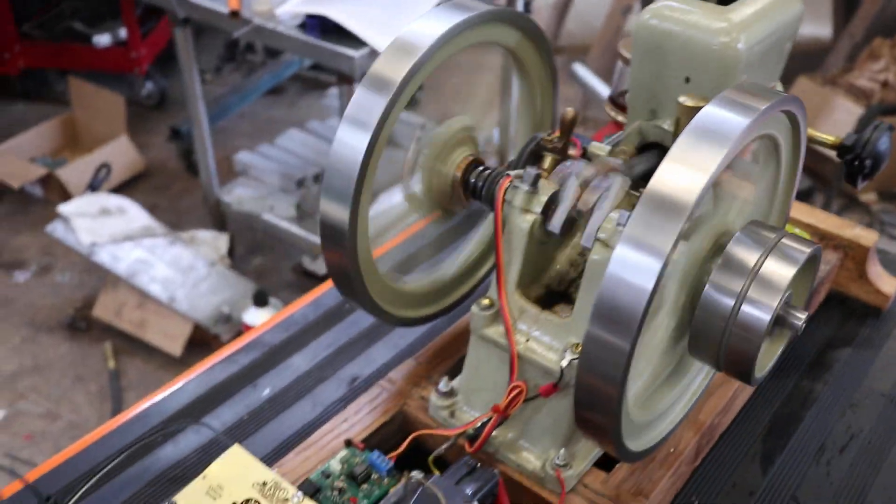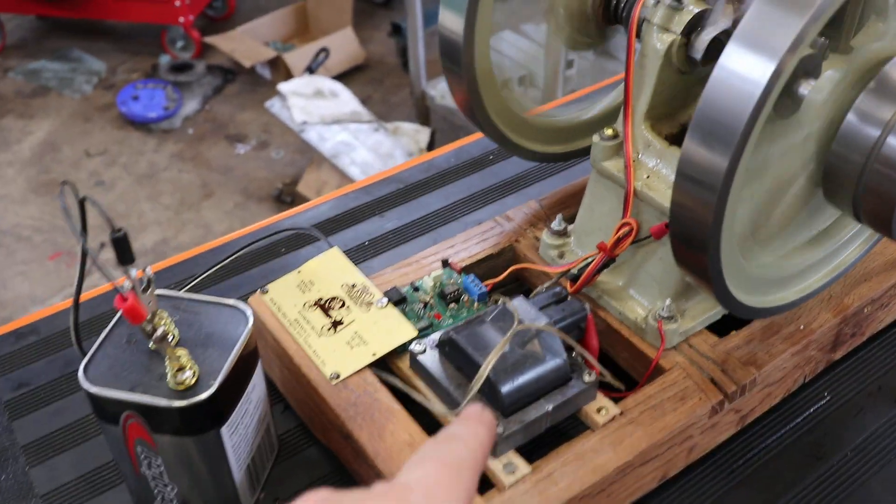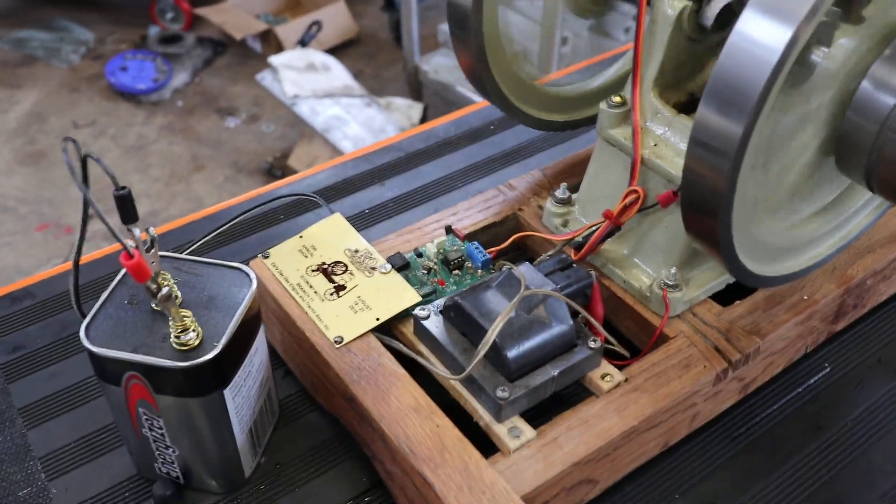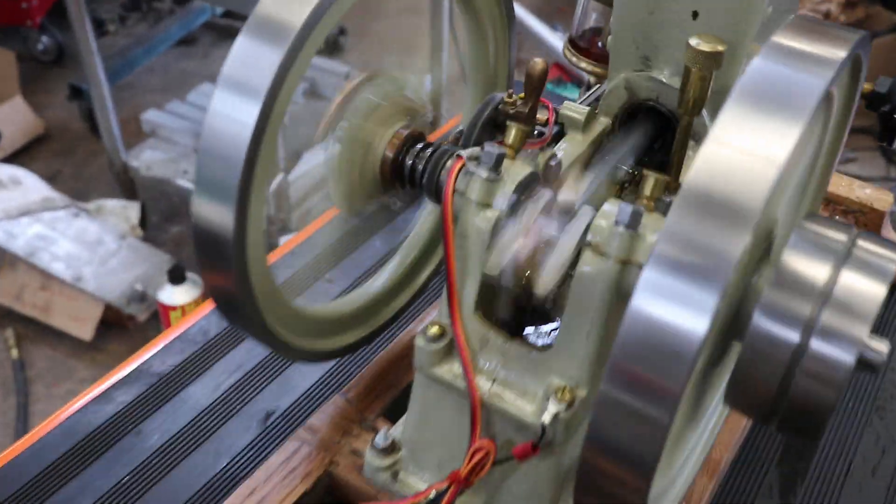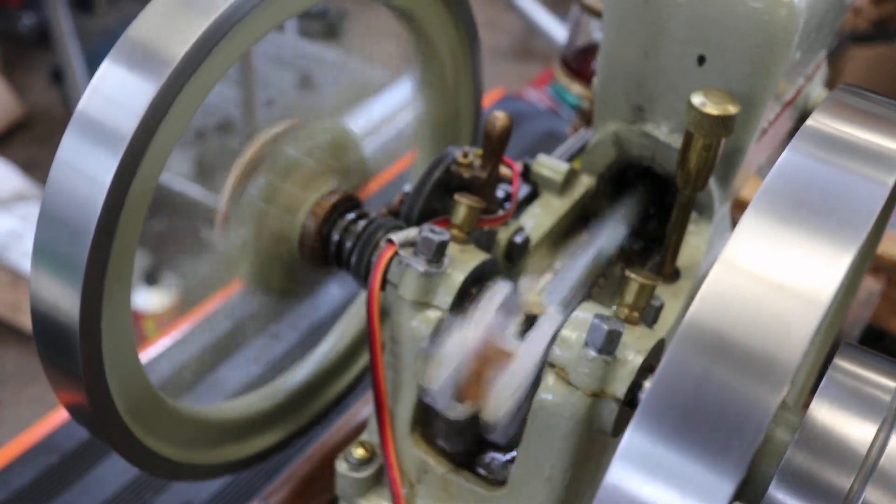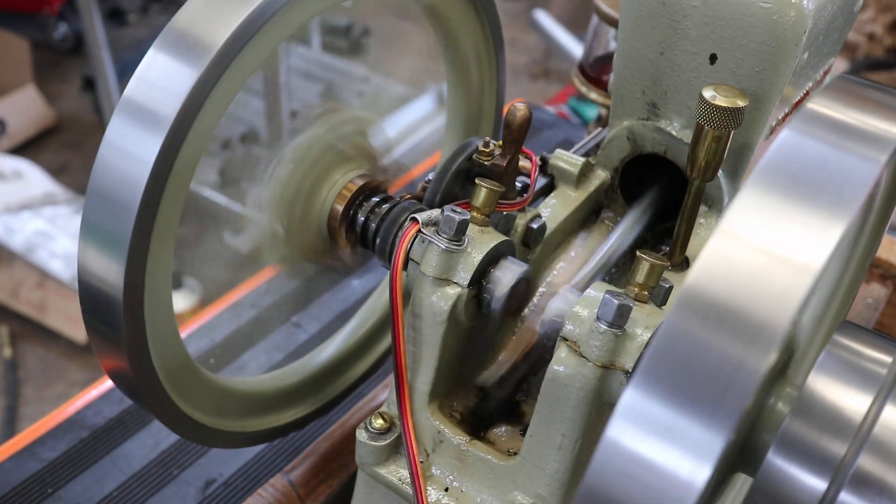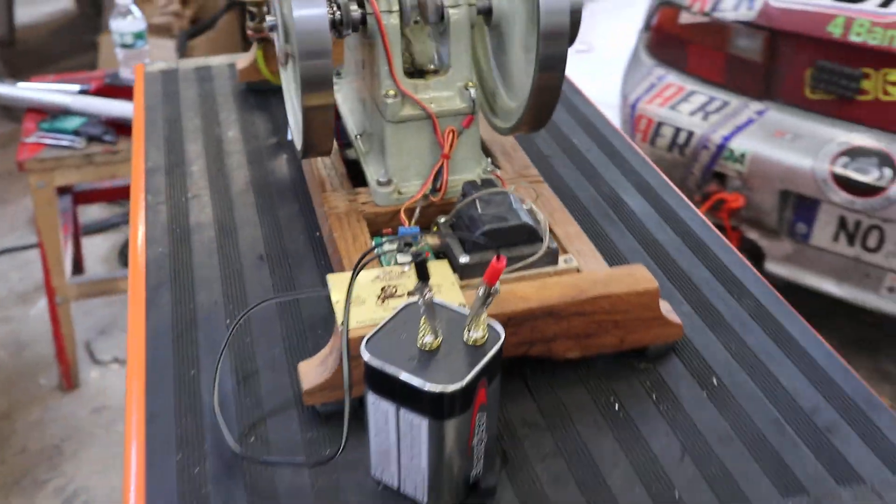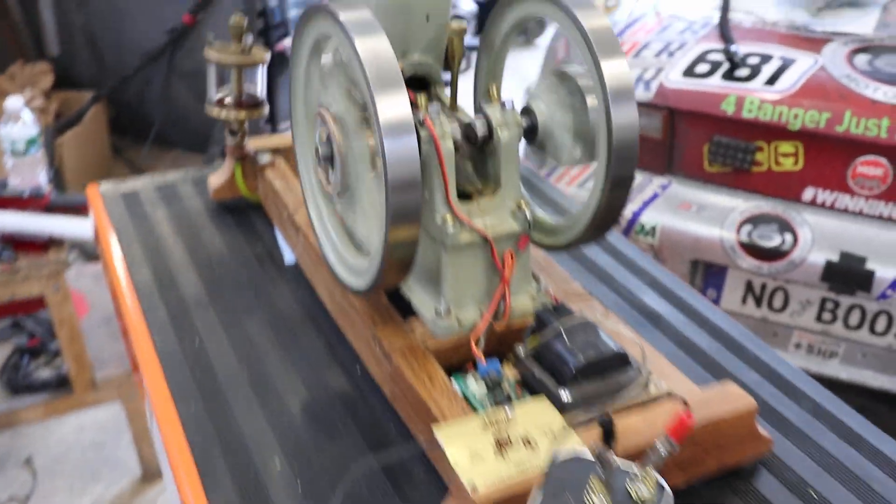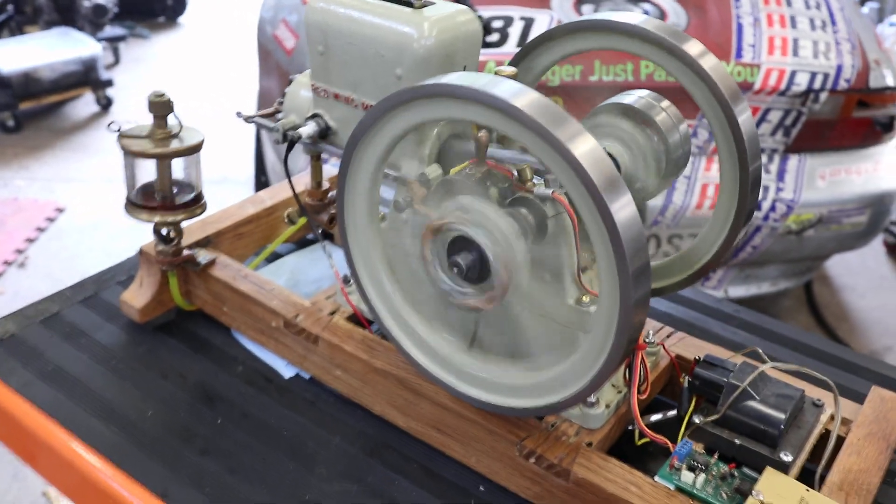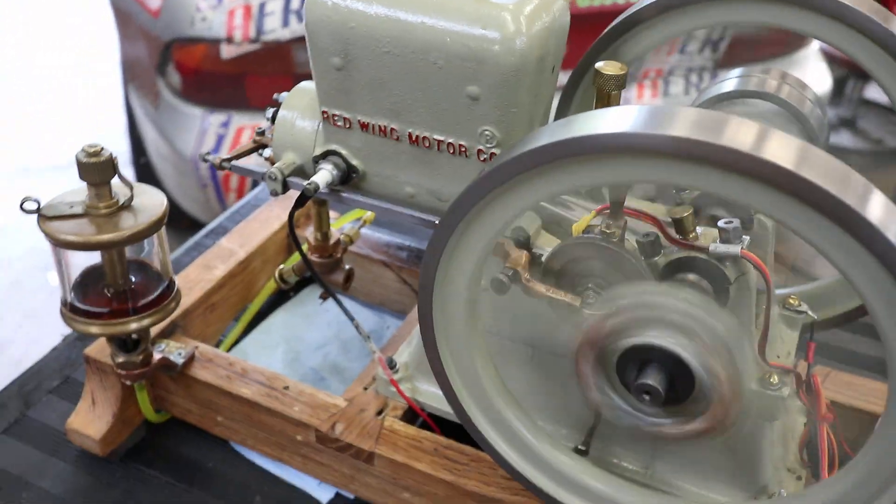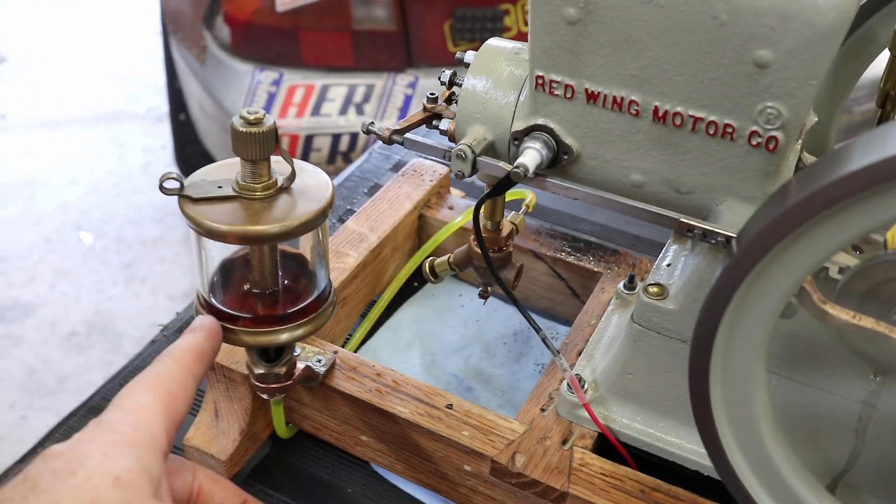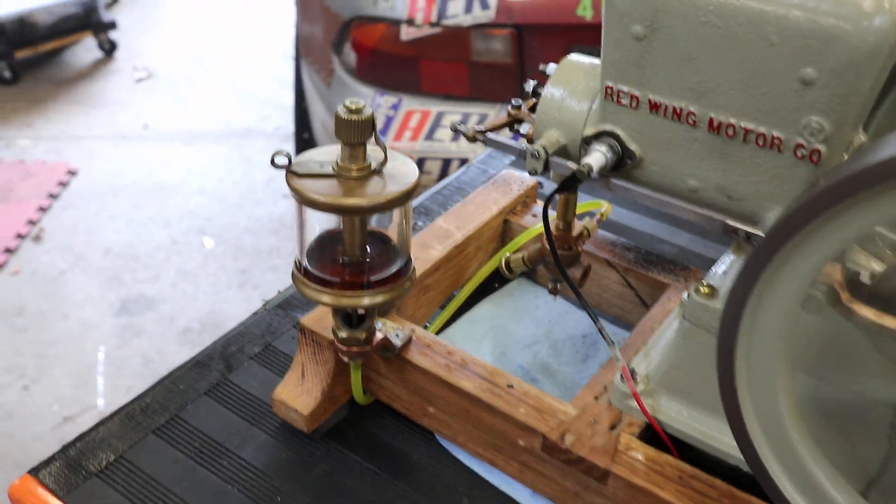It's getting its ignition from actually an automotive coil and a little computer board with the hall effect sensor. These wires go to a little hall effect sensor with a magnet. I'll show you that in a second and then it's running off of a six volt dry cell battery. Right now I'm running it on two-stroke fuel so it gets a little extra lubrication for the piston and so this oiler has been converted to be a little fuel tank.